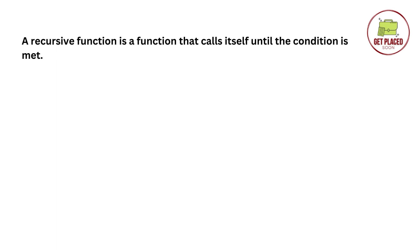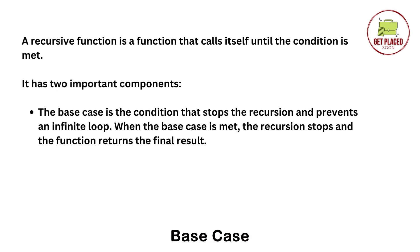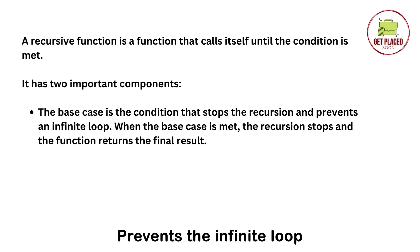In recursion we have two main components. The first component is the base case. The base case is nothing but the condition I was talking about. The base case stops the recursion and it prevents an infinite loop. Sometimes when we write the wrong condition, or if we do not mention any base case in our program, the function ends up in an infinite loop. That's why we need to write it properly. When the base case is met, the recursion is stopped and the function returns the final result.